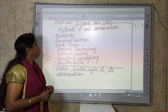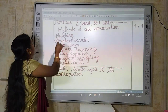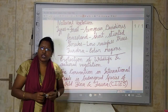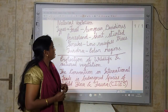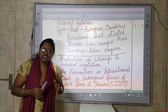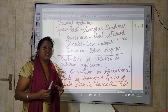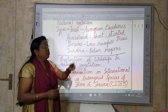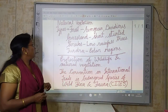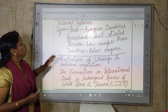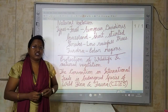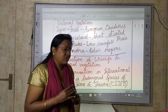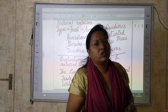Now we move on to our next topic, which is natural vegetation. Natural vegetation means all the trees, plants, and grasses which are available in nature. There are four types of natural vegetation found on the earth.